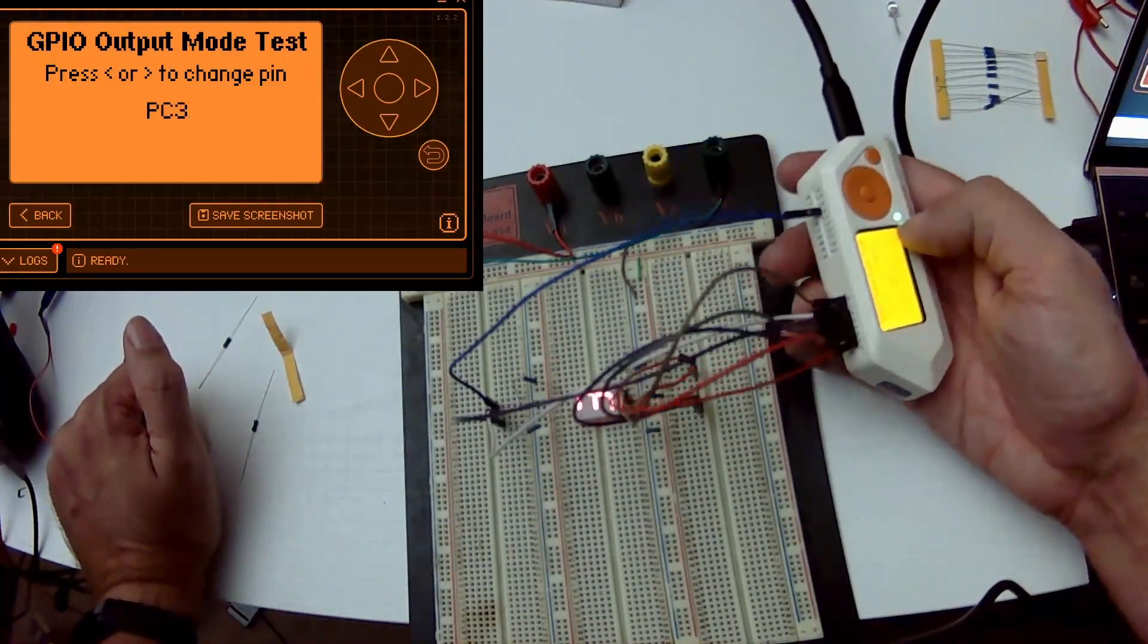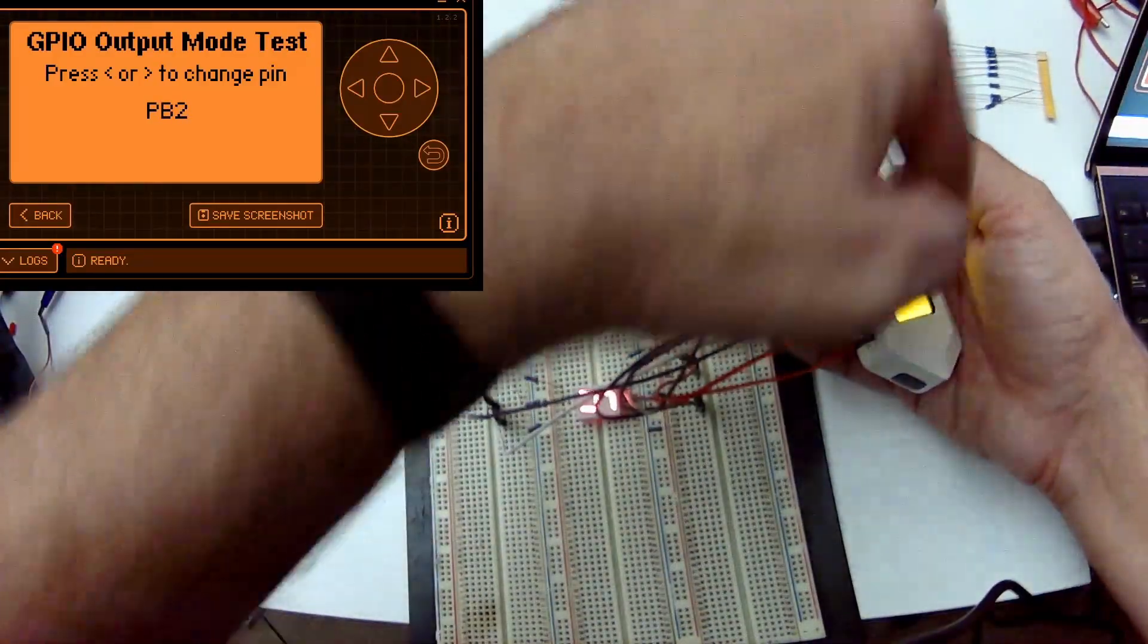So instead of three, if we wanted the number four, we would just have to turn on and off a few of these segments. And here you go.